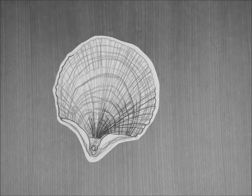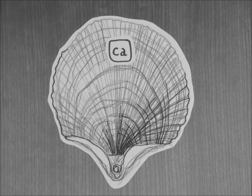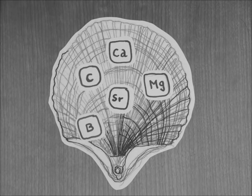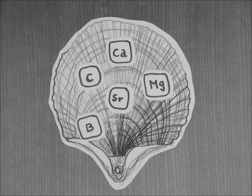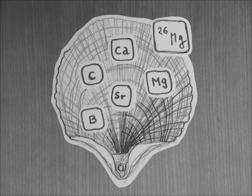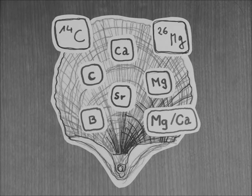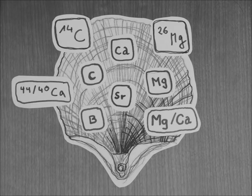The shell is composed of different elements such as calcium, magnesium, carbon, strontium, and boron. Moreover, the archived elements have specific isotopes such as magnesium-26 or carbon-14. Important details are also available by investigating element and isotope ratios such as magnesium to calcium element ratio and calcium-44 to calcium-40 isotope ratio.